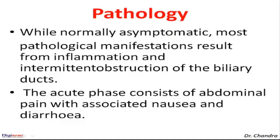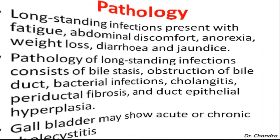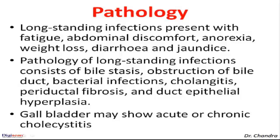Pathology caused by Clonorchis sinensis: while most infections are normally asymptomatic, most pathological manifestations result from inflammation and intermittent obstruction of the biliary ducts. The acute phase consists of abdominal pain with associated nausea and diarrhea. Long-standing infections present with fatigue, abdominal discomfort, anorexia, weight loss, diarrhea, and jaundice. Pathology of long-standing infections consists of bile stasis, obstruction of bile duct, bacterial infections, cholangitis, periductal fibrosis, and ductal epithelial hyperplasia. The gallbladder may show acute or chronic cholecystitis.